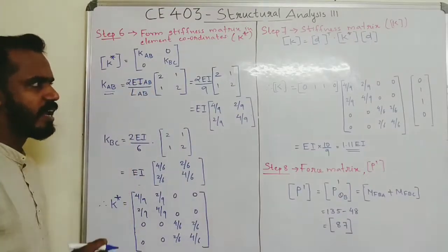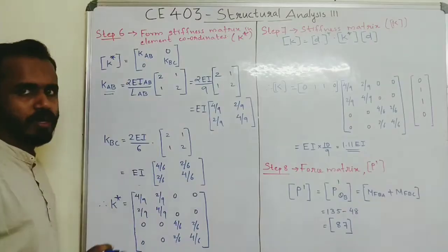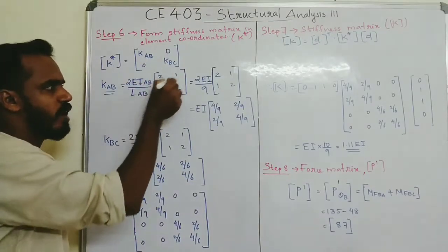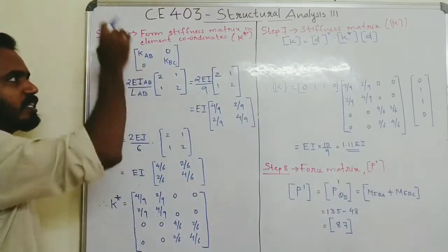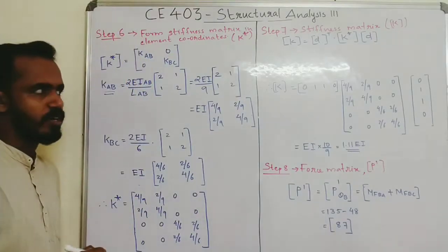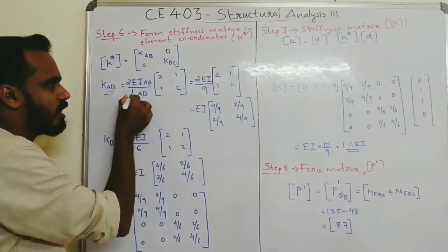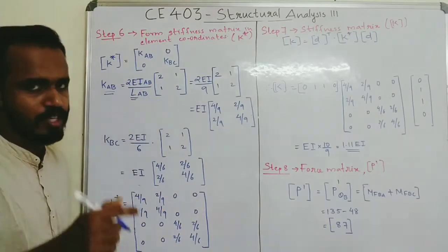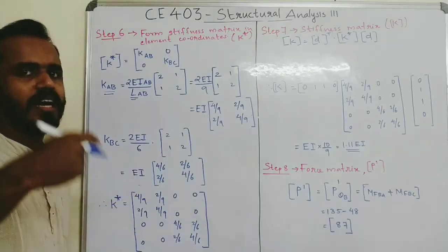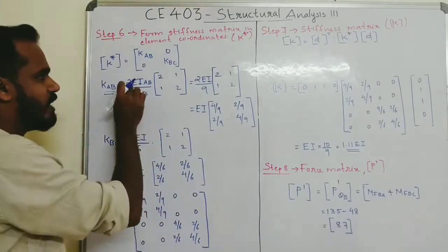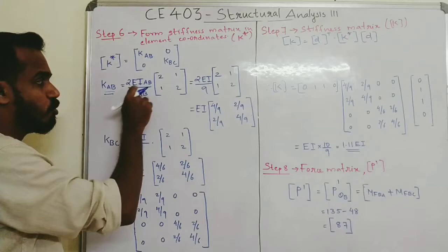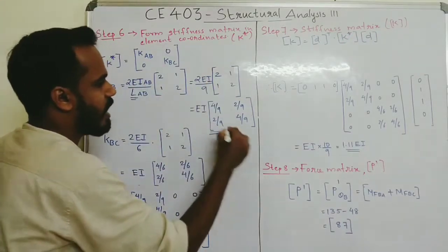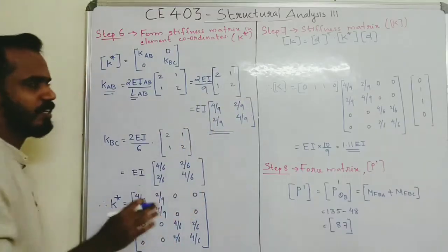The individual member stiffness is: 2EI/L × [2, 1; 1, 2]. For member AB with L = 9m: KAB = (2EI/9) × [2, 1; 1, 2] = EI × [4/9, 2/9; 2/9, 4/9]. For member BC with L = 6m: KBC = (2EI/6) × [2, 1; 1, 2] = EI × [4/6, 2/6; 2/6, 4/6].